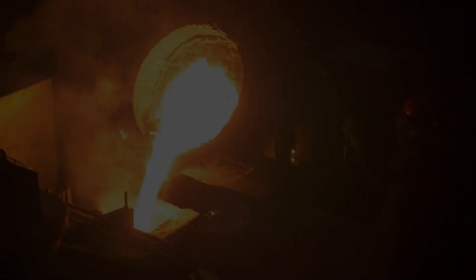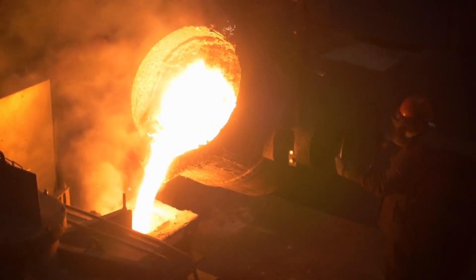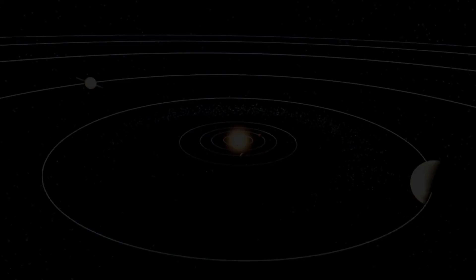An object will emit more the hotter it is. One of the best examples of how heat radiation spreads throughout the solar system is the sun.